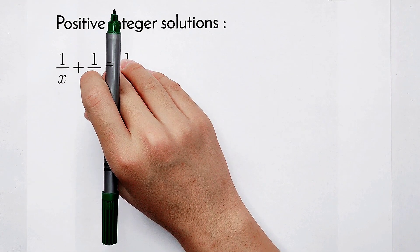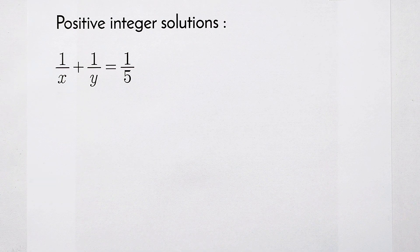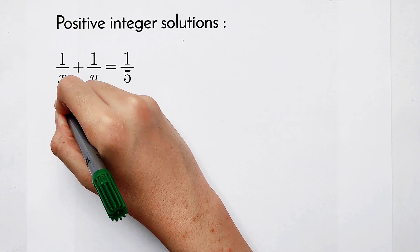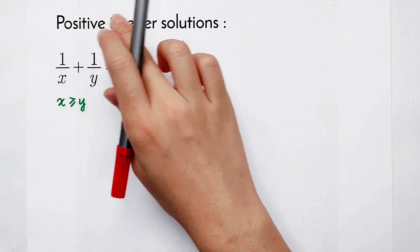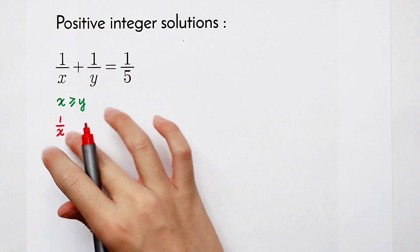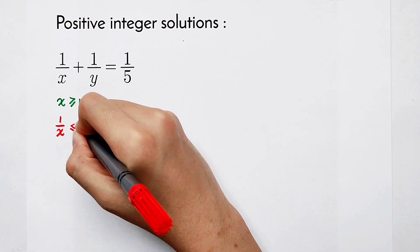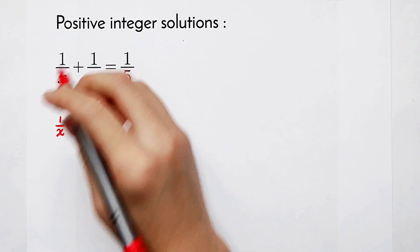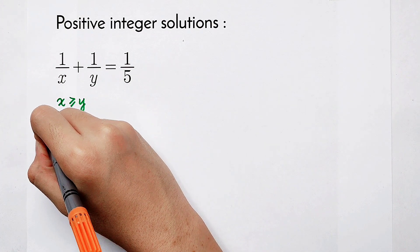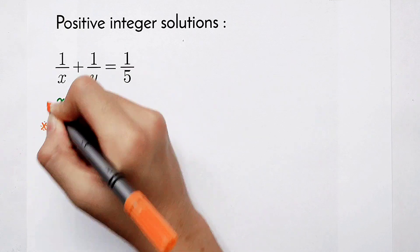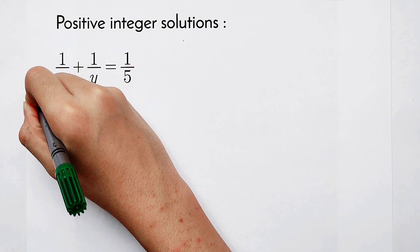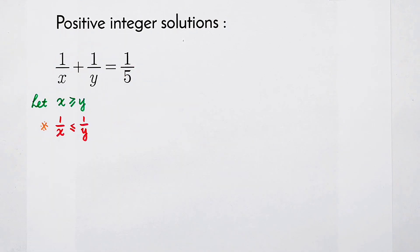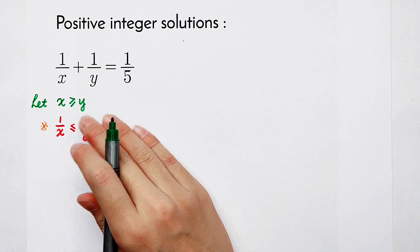Since the left-hand side is a cyclic symmetry formula, I'm going to sort x and y. Suppose x is greater or equal to y. Because they're both positive integers, we can get 1 over x is smaller or equal to 1 over y.